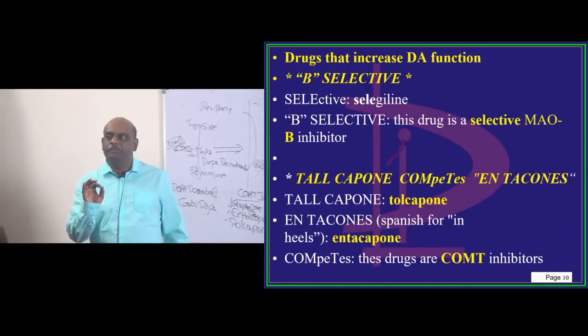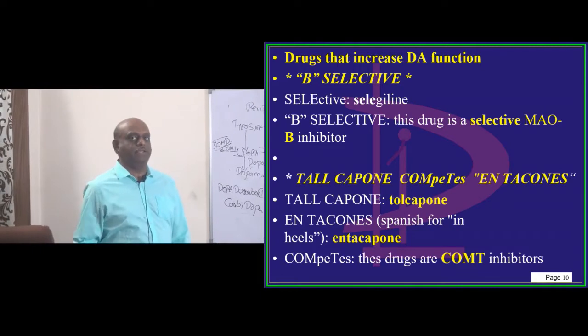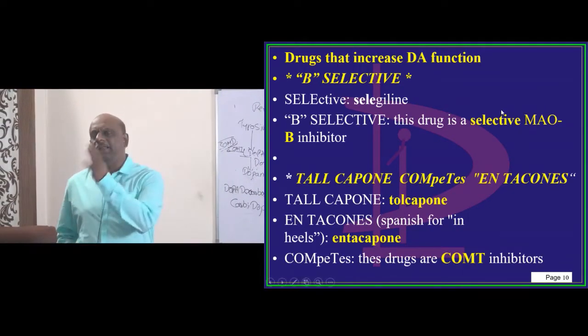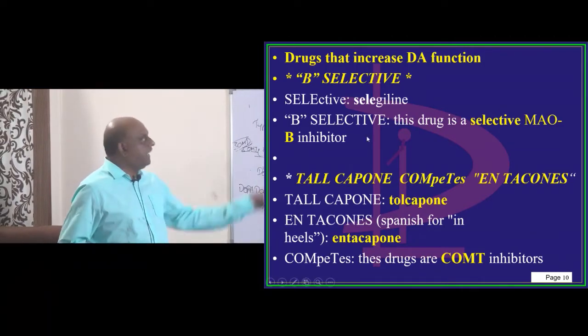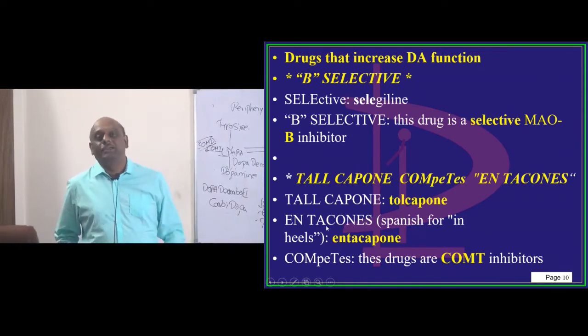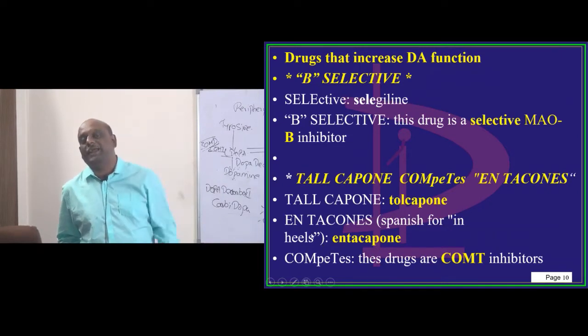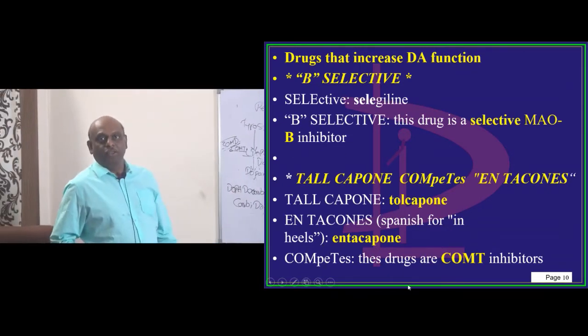So is there any other simple, playful way of trying to remember this? Yes, definitely. Be selective. Be selective is what you can remember. Selective is selegiline. B is MAO-B. So MAO-B inhibitor, not A. MAO-B inhibitor. Be selective is what you need to remember.